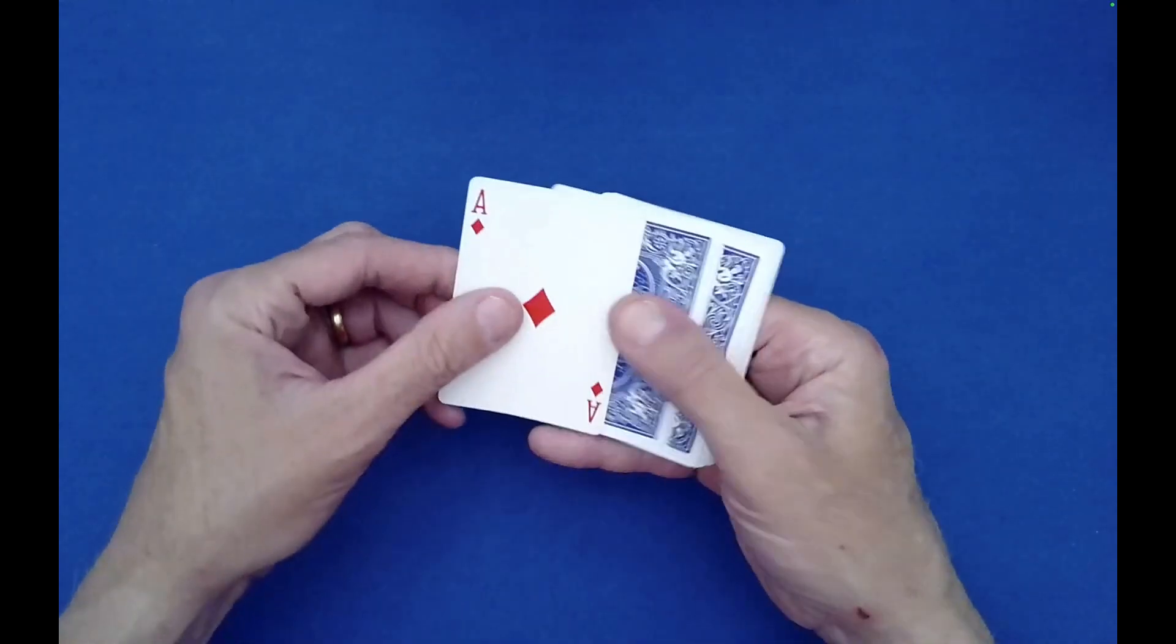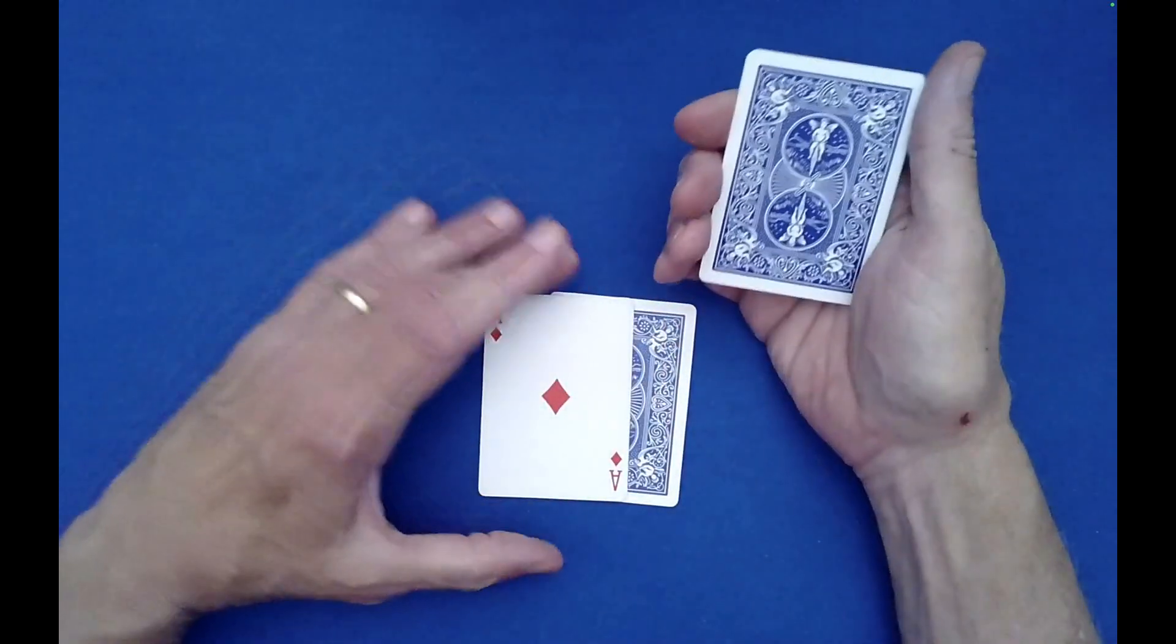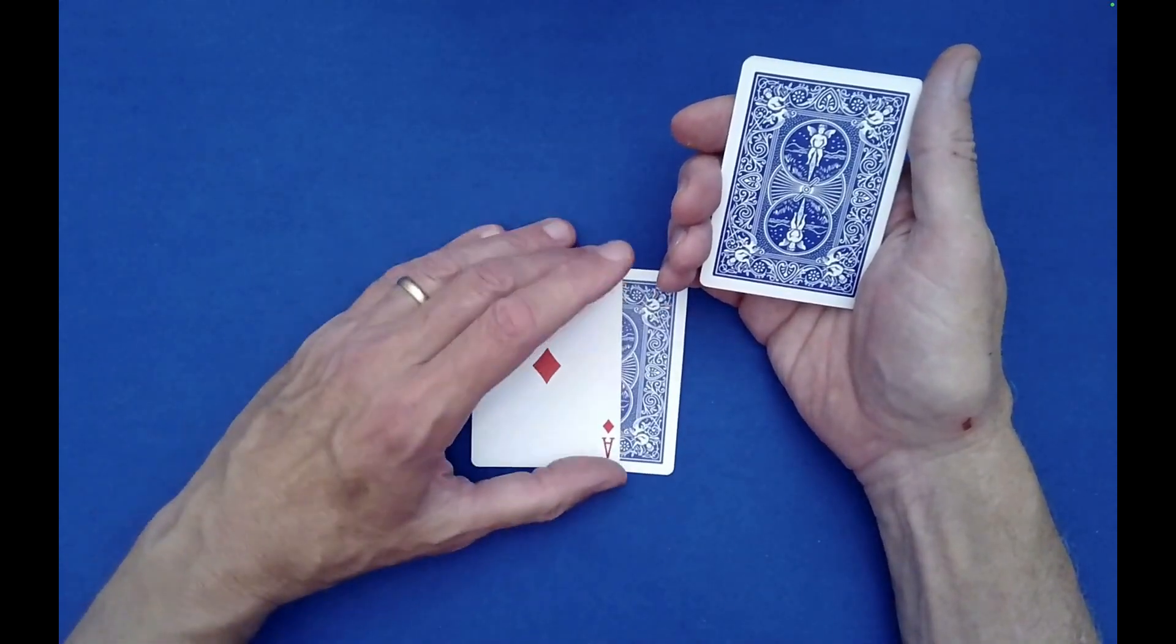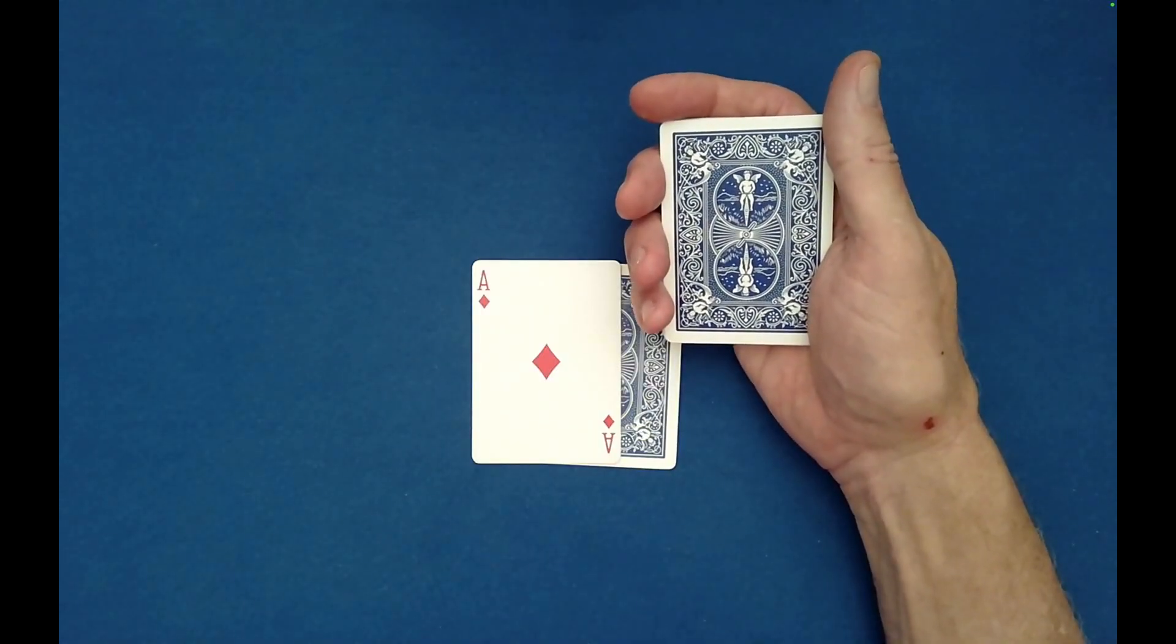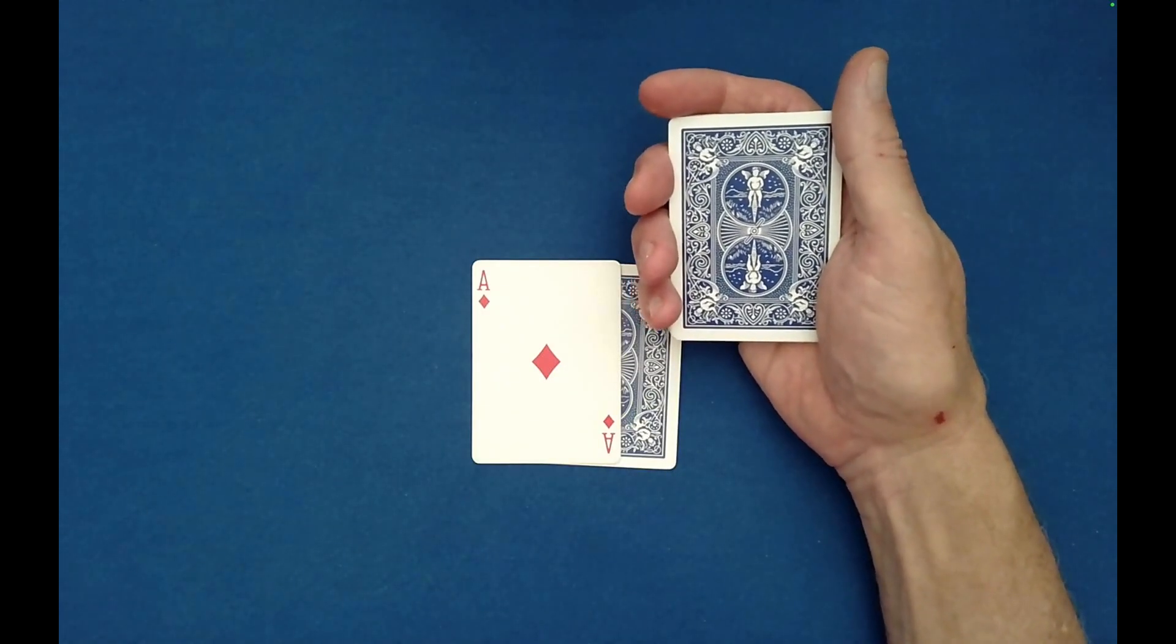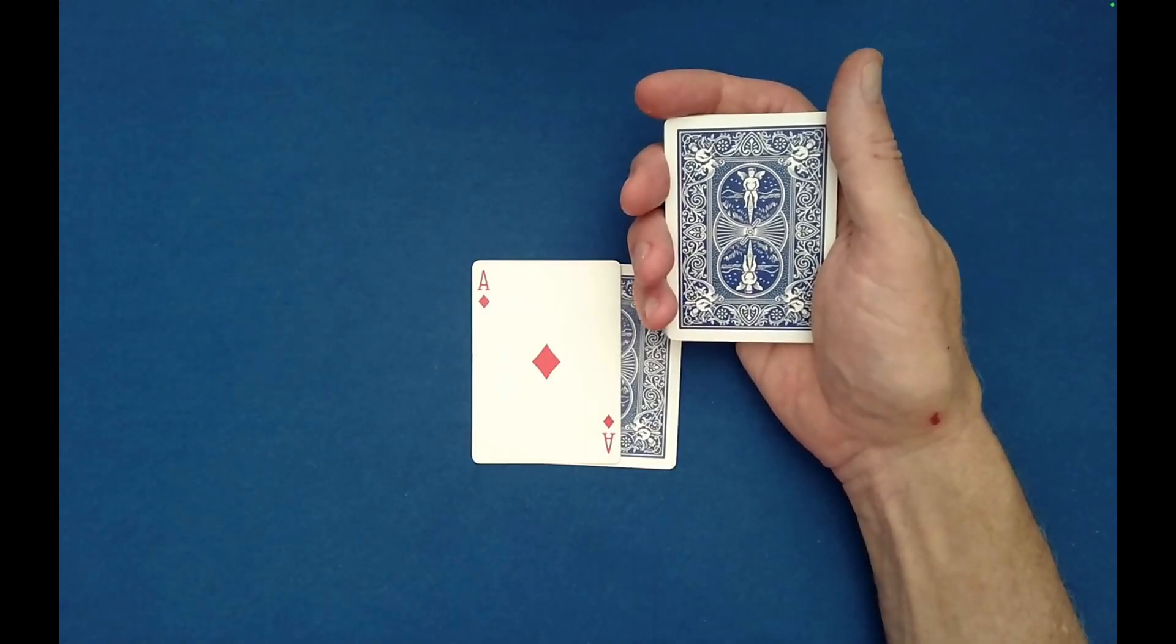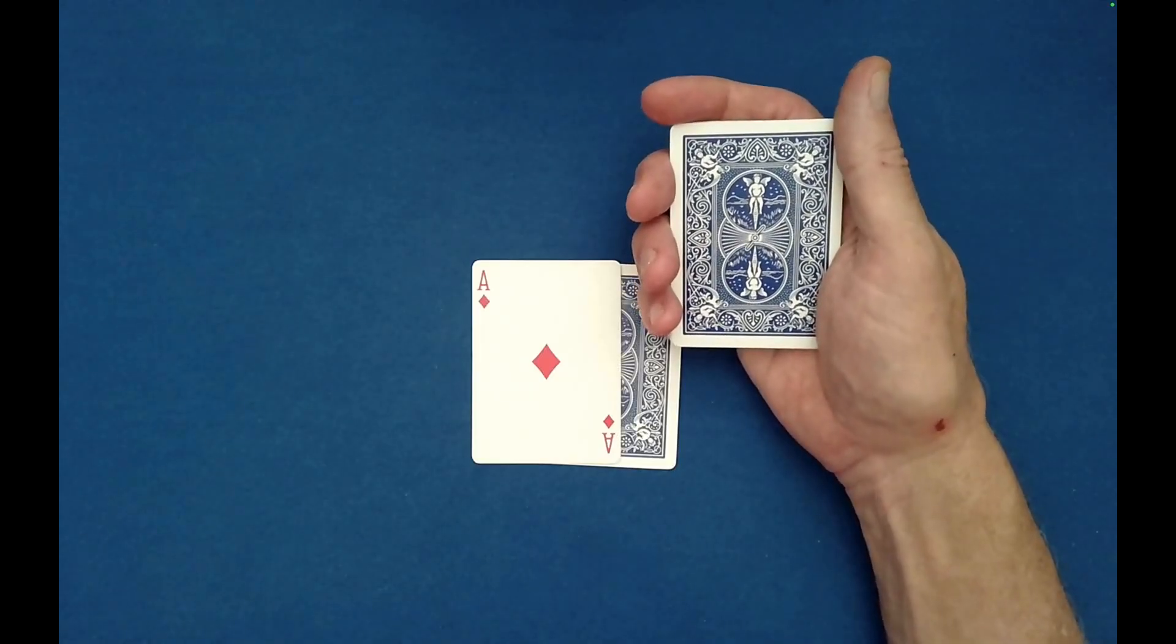And then take the top two cards, set them down like so, and then tell the spectator that the cards are now going to clearly communicate to you, the performer, and in fact to the entire world, the suit of the royalty pair that the spectator freely and randomly chose at the beginning.